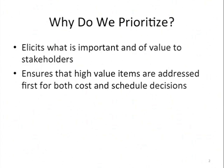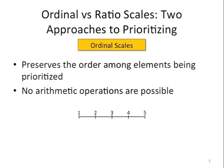There are lots of reasons to prioritize, and we do it all the time informally. What we'll be talking about in this introduction is a couple of categories of formal prioritization methods using some quantitative approaches — specifically, ordinal approaches versus ratio approaches, two measurement scales that are used to prioritize.